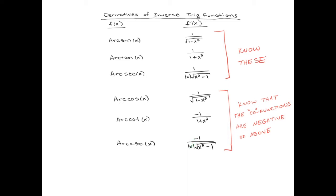So normally what we do is I just ask that you know the derivative of arc sine is 1 over the square root of 1 minus x squared, the derivative of arc tan is 1 over 1 plus x squared, and the derivative of arc sec, which is 1 over the absolute value of x times the square root of x squared minus 1. You should know these three formulas.